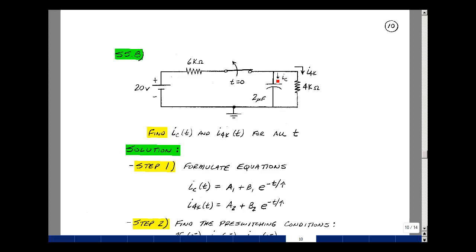Given this one capacitor circuit with a switch that opens at time t equals zero, can you find the capacitor current and the resistor current for all time?